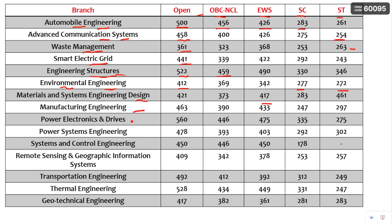Similarly, cutoffs are provided for Manufacturing Engineering, Power Electronics and Grid Drives, Power Systems Engineering, Systems and Controls Engineering, and RS and GIS — which is also from Civil Engineering. You can see the cutoffs for each of these branches in the table.